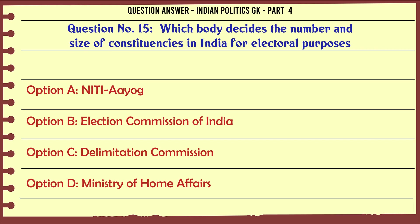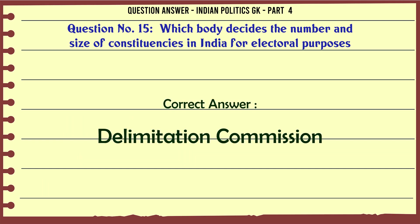Which body decides the number and size of constituencies in India for electoral purposes? A. NITI Aayog. B. Election Commission of India. C. Delimitation Commission. D. Ministry of Home Affairs. The correct answer is the Delimitation Commission.